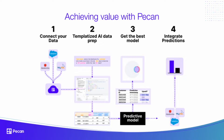PECAN enables non-data scientists to achieve all that within a single platform, by automatically connecting to the relevant data sources, identifying what the company wants to achieve, and performing some simple low-code operations that generate real predictive outcomes.